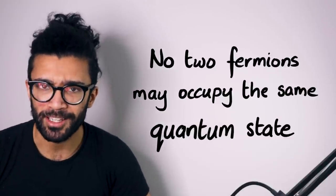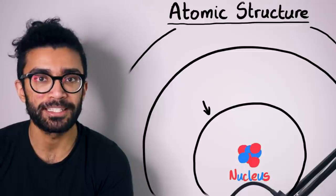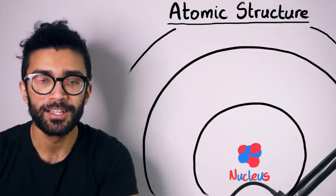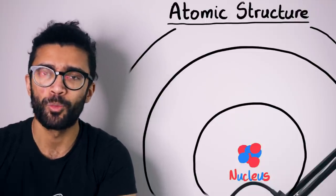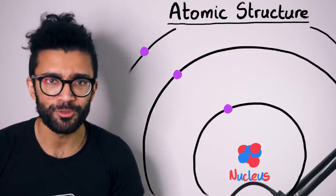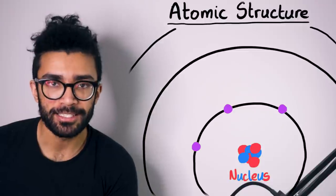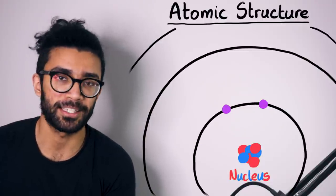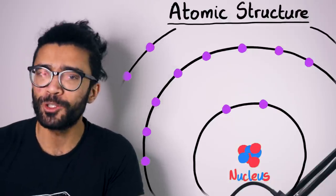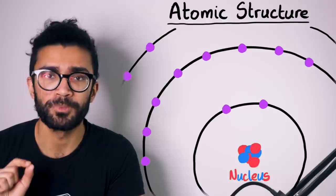Let's now consider electrons in atomic shells. We've got a nucleus, and we've got energy levels that the electrons can occupy surrounding that nucleus. Electrons in each one of these shells have a few different properties, and it turns out that we can represent each one of these properties with a simple, single number. We've actually seen one of these numbers already: it's known as the principal quantum number, and it represents which shell the electron is in.